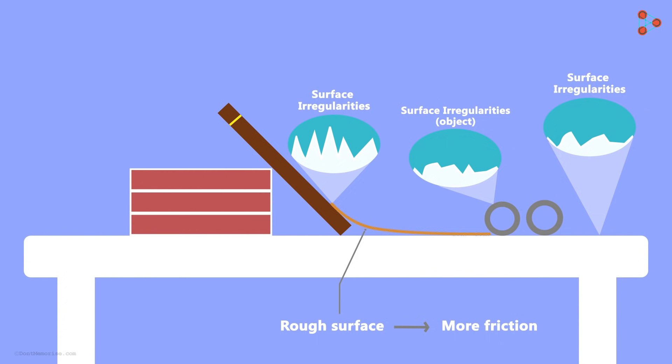So the first factor affecting friction is the nature of surfaces. Is there any other factor you can think of?